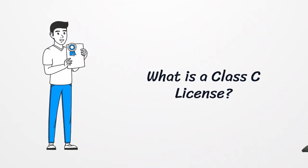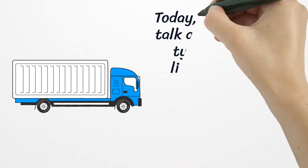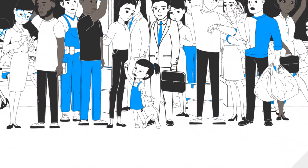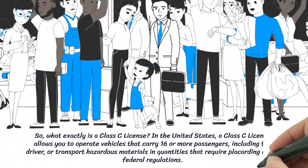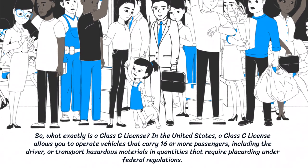What is a class C license? Today we're going to talk about a specific type of driver's license that you might need depending on the vehicle you plan to drive — the class C license. In the United States, a class C license allows you to operate vehicles that carry 16 or more passengers, including the driver.